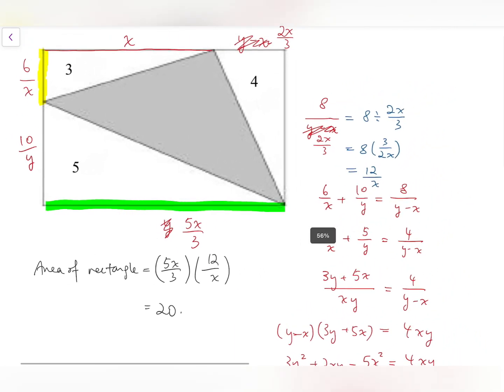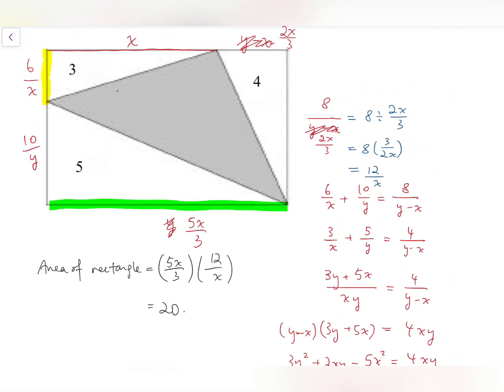And so the shaded region is just obvious. It's just 20 minus 3 minus 5 minus 4, which is 8. And this is our final answer.